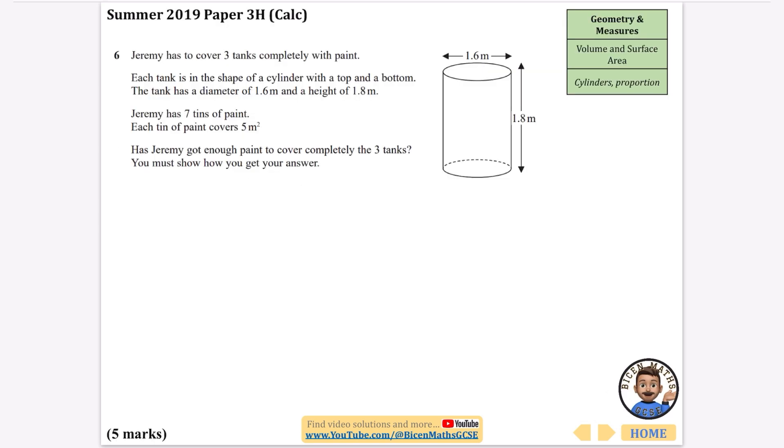I'm going to begin by answering this question about cylinders. There's only one on cylinders and one on prisms. It says that Jeremy has to cover three tanks completely with paint. Each tank is in the shape of a cylinder with a top and a bottom. The tank has a diameter of 1.6 and a height of 1.8. Jeremy has seven tins of paint, and each tin covers 5 meters squared.